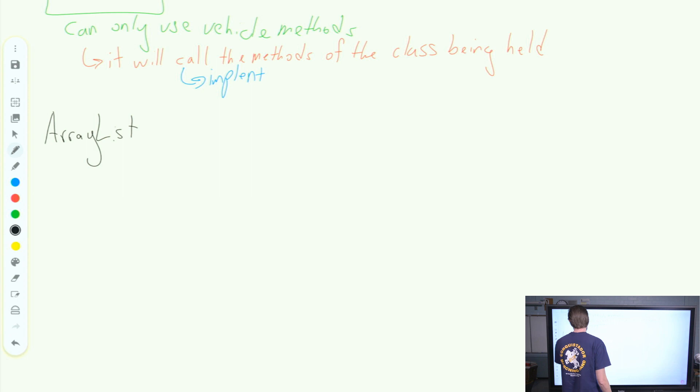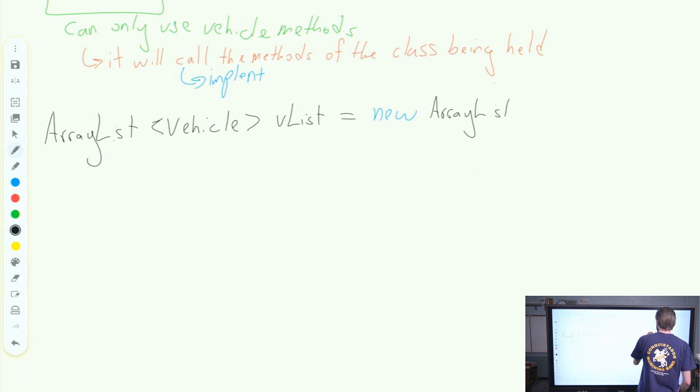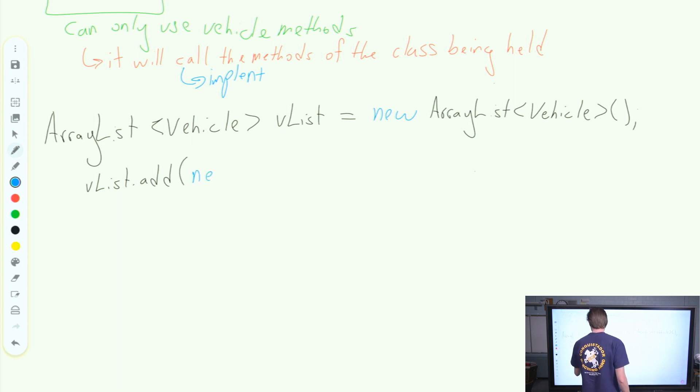So we all know ArrayLists can hold just the one data type at a time. So we'll call this VList. So we're going to create an ArrayList that holds the vehicle type. Not VList, new ArrayList. Okay, so we're going to hold the type vehicle. And in general, we know that we would then fill this.